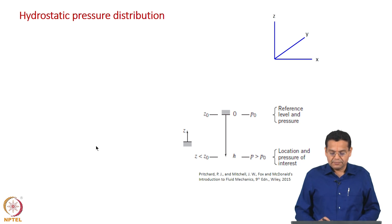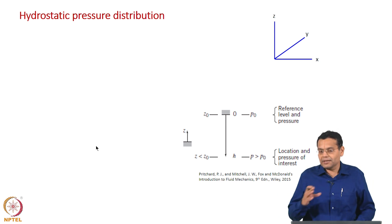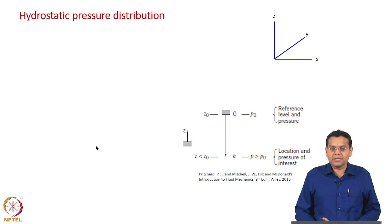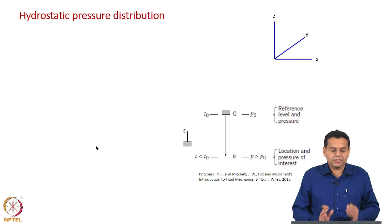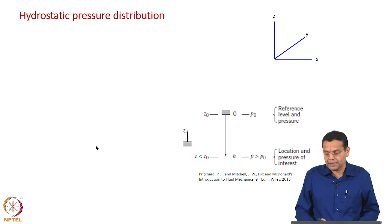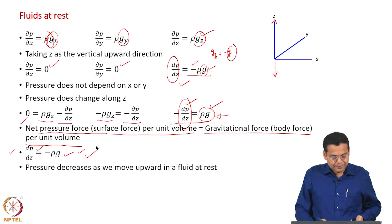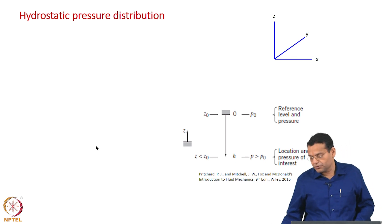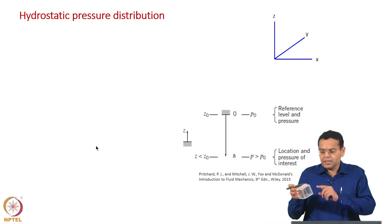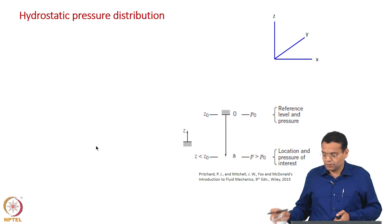When we discuss a fluid under rigid body motion, we will again discuss pressure distribution, but we would not call it hydrostatic pressure distribution. Only when the fluid is under rest is that distribution called hydrostatic. Now we are going to use the equation dp/dz = -ρg to get simple expressions for the variation of pressure in a liquid and gas.